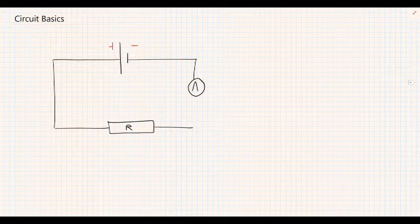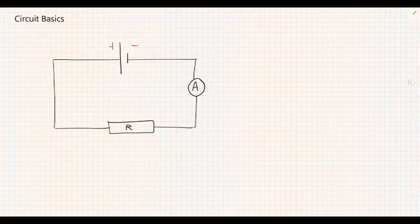An ammeter is a device which measures the current in the circuit. In an exam situation you'd really want to draw that with a ruler, make all your lines straight, and connect all the lines without having any gaps.